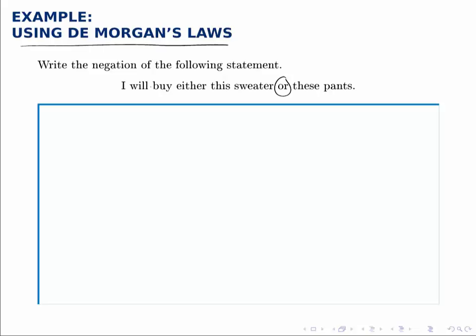So if we call P, I will buy this sweater, and Q, I will buy these pants, this statement looks like P or Q.